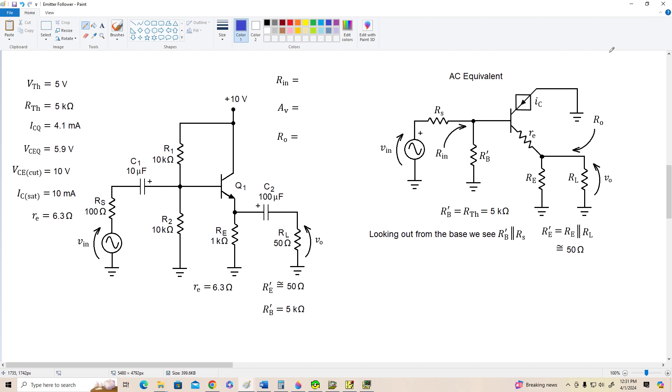Alright, so here's our AC equivalent. We've shorted all the capacitors and our supply rail to ground activated VIN. And let's take a look at the input resistance first. Now RS is not part of the amplifier specifically, so it doesn't factor into the input resistance.